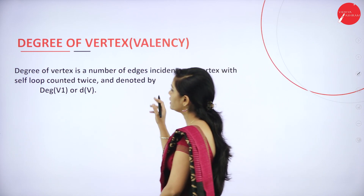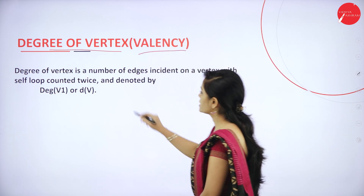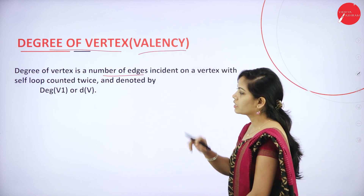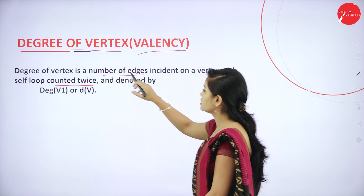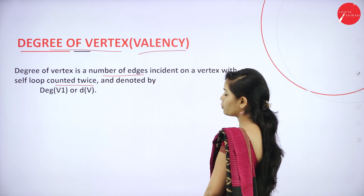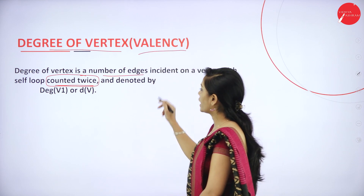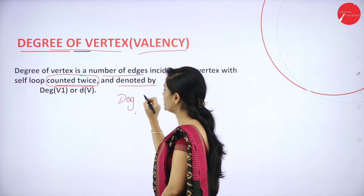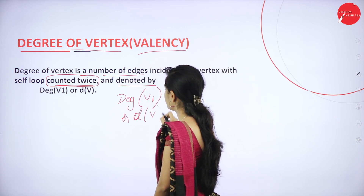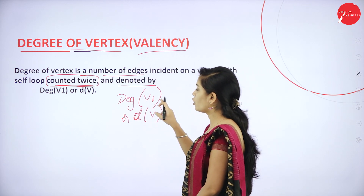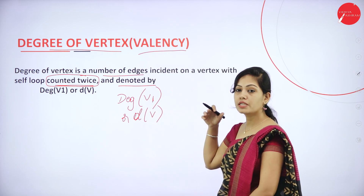The next concept is degree of vertex, also known as valency. The degree of a vertex is the number of edges incident on a vertex, with self-loop counted twice. It is denoted by Deg(V1), D(V1), or D(V). So the degree of vertex counts the number of edges, and self-loops are counted twice.